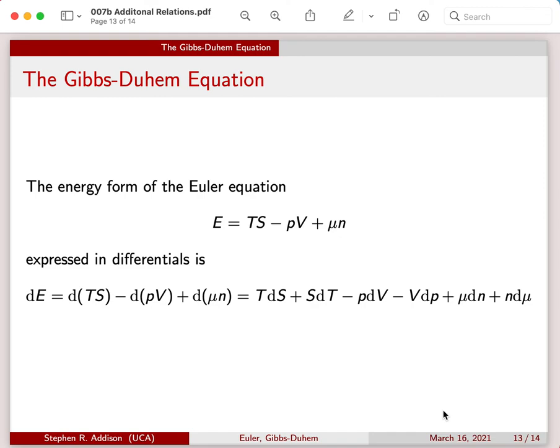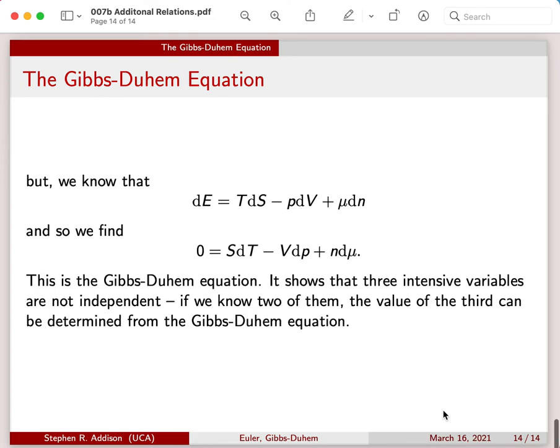And then, what we're left with is this equation, which is the Gibbs-Duhem equation. And it shows that the three intensive variables are not independent. If we know two of them, the value of the third can be calculated from the Gibbs-Duhem equation.